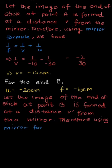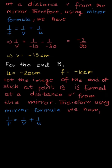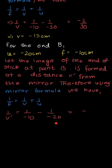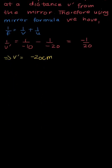Therefore, using the mirror formula: 1/F = 1/V' + 1/U. Substituting the values, 1/V' = 1/(−10) − 1/(−20), which gives 1/V' = −1/10 + 1/20. Calculating, V' comes out to be −20 cm.